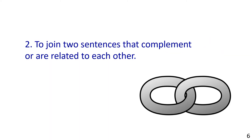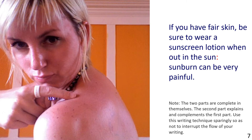Here's the second way to use a colon: to join two sentences that complement or are related to each other. Here's an example: "If you have fair skin, be sure to wear a sunscreen lotion when out in the sun: sunburn can be very painful." Note the two parts are complete in themselves. The second part explains and complements the first part. Use this writing technique sparingly so as not to interrupt the flow of your writing.